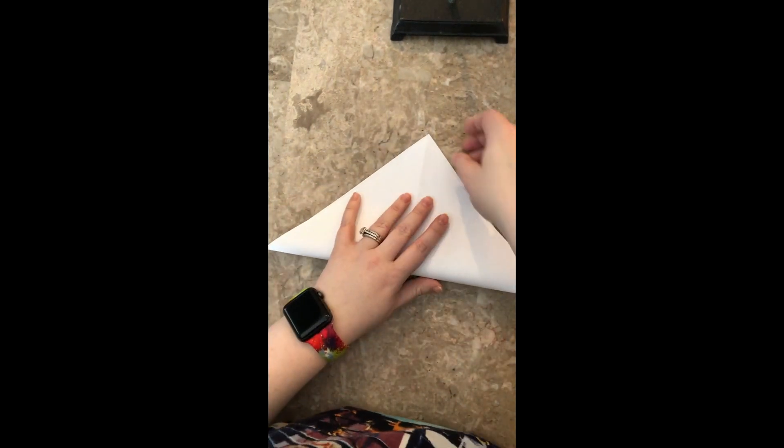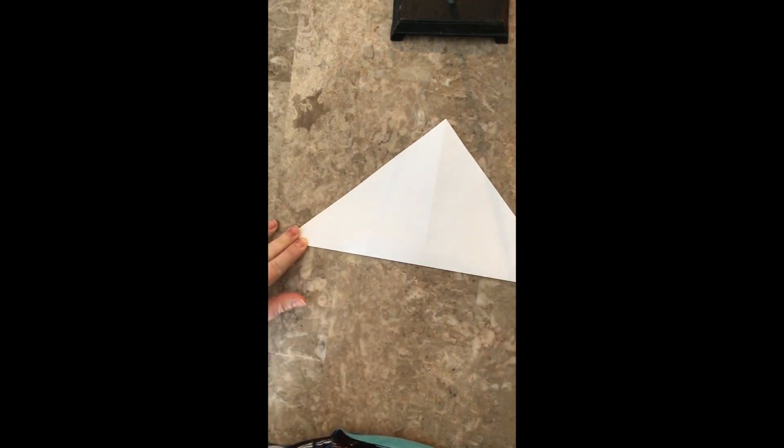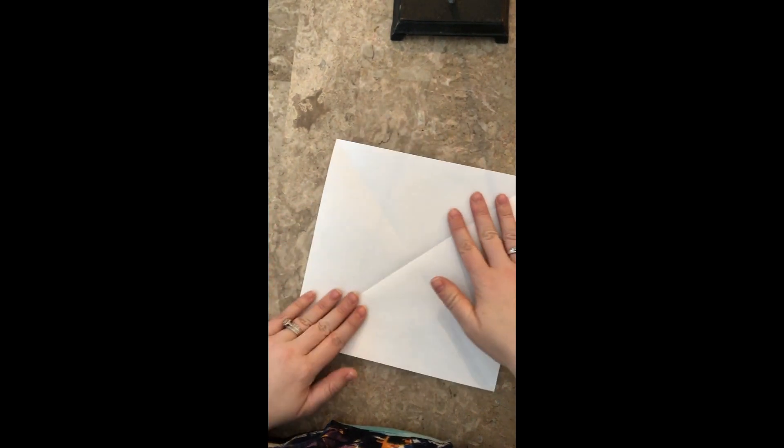My second fold is going to be the other corner to the opposite corner like so. So when you open this up, it should have an X through the center of your page like this.